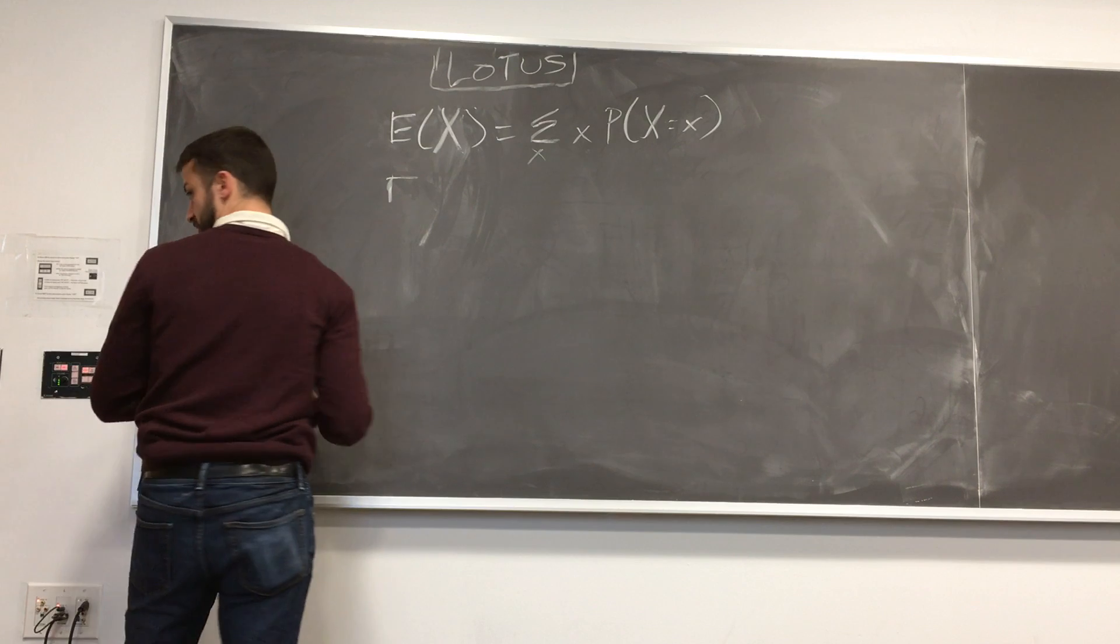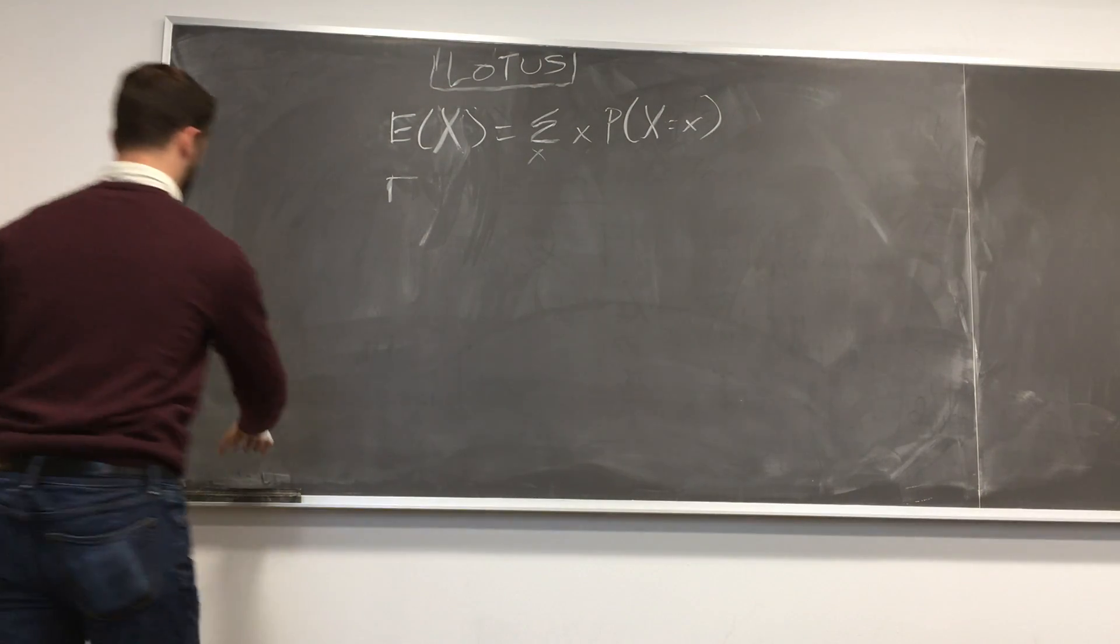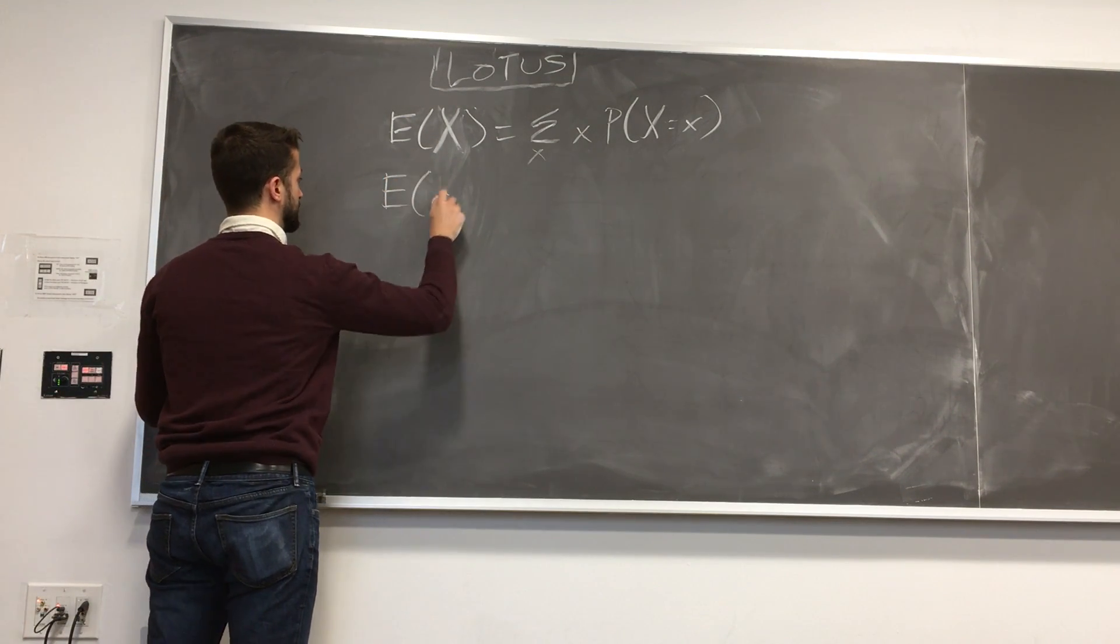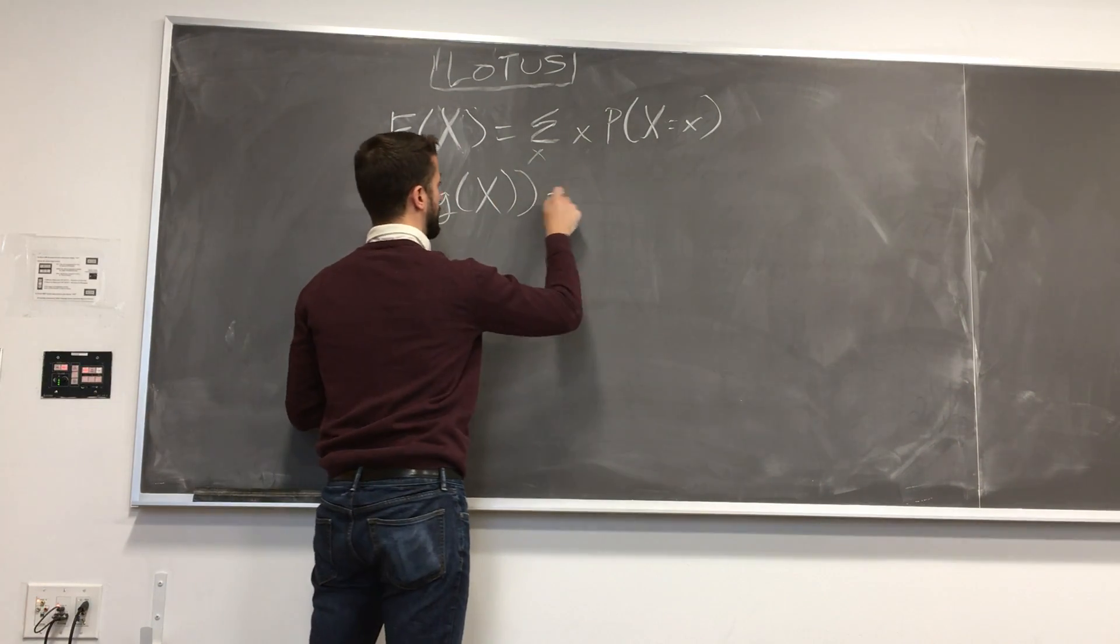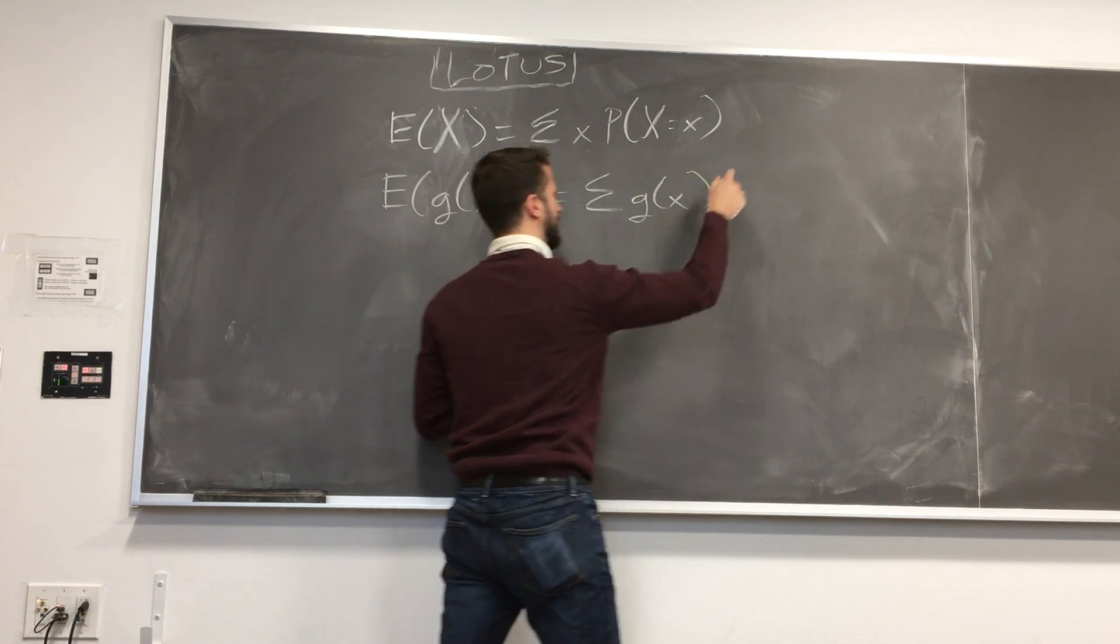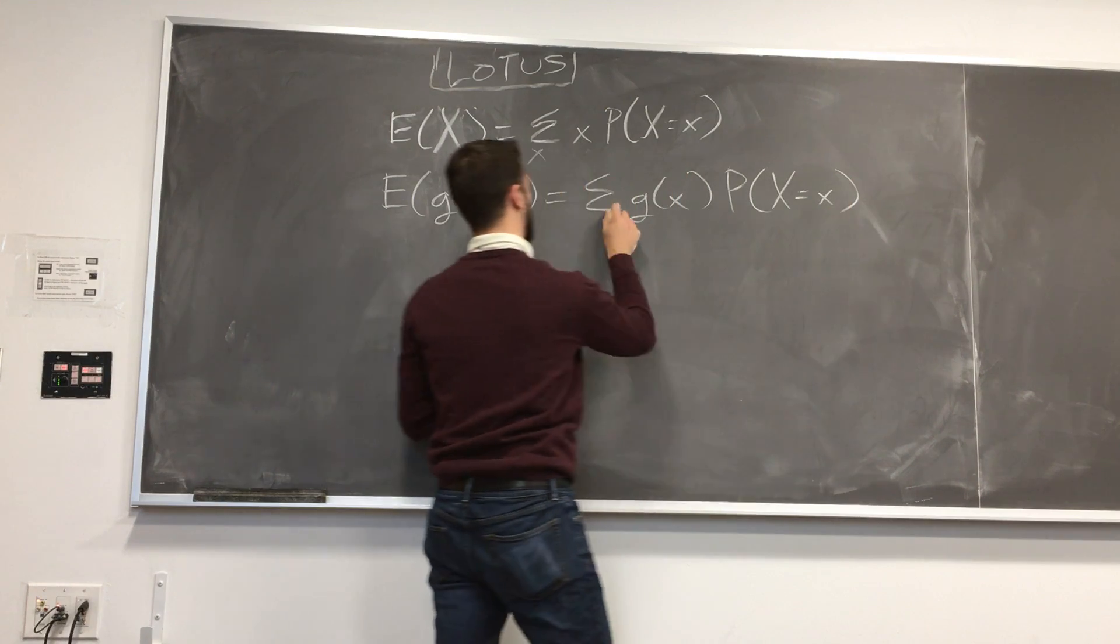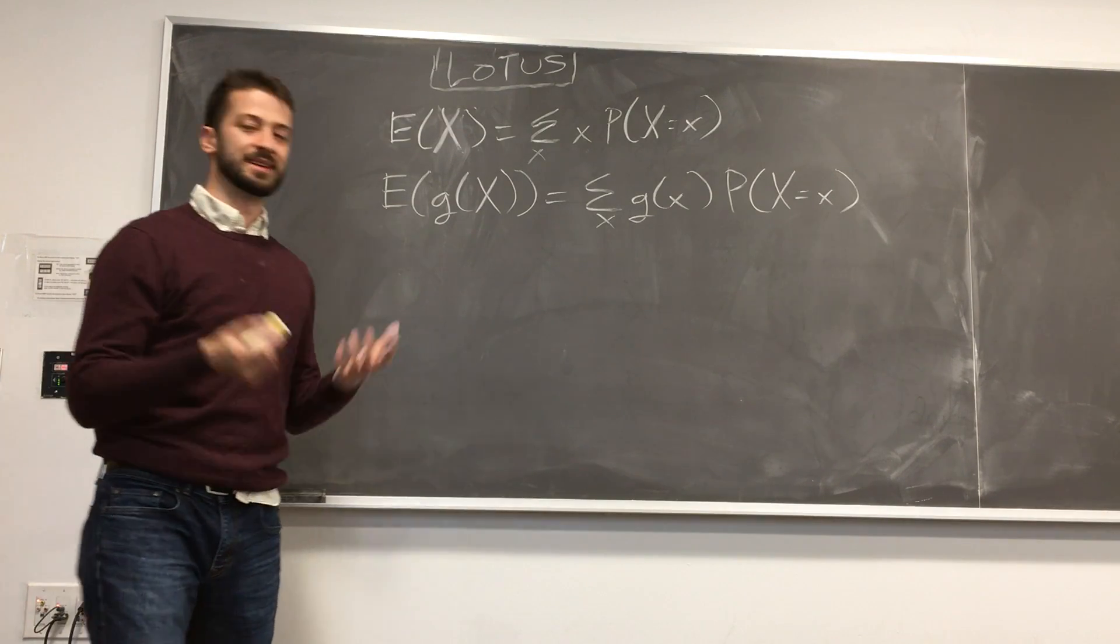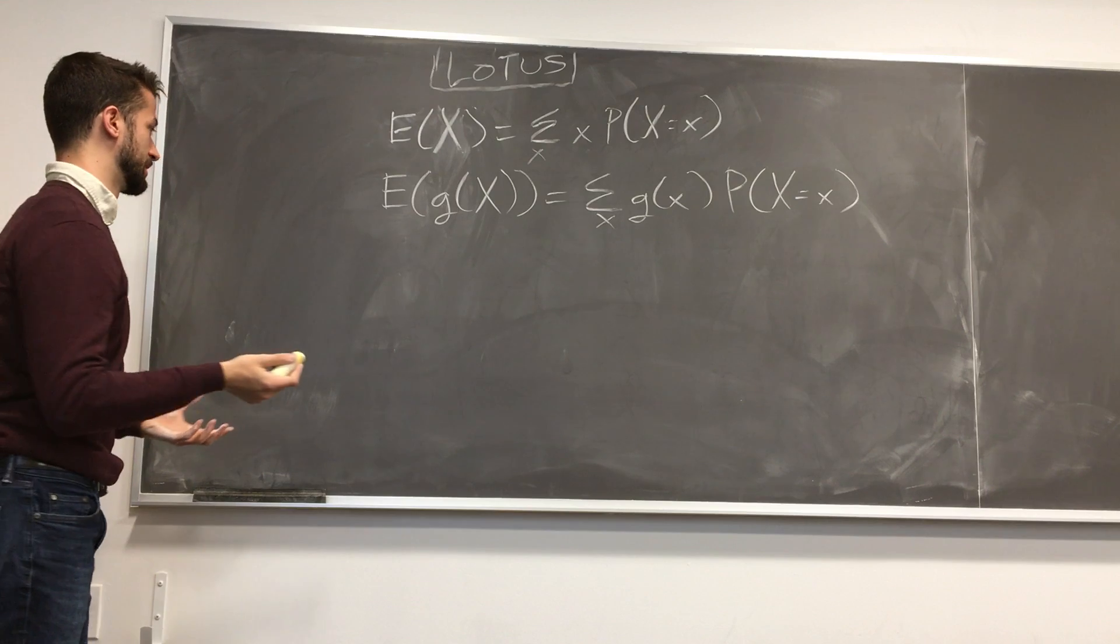We've also seen the expected value of a function of x. So the expected value of g of x. Again, capital X, random variable. Equals the sum of g of little x, the values that x can take on, times the PMF of x, probably the case of little x, summed over all x. Okay. So these are the formulas. You've seen them. You don't really understand. Maybe you don't buy into them as much as you should.